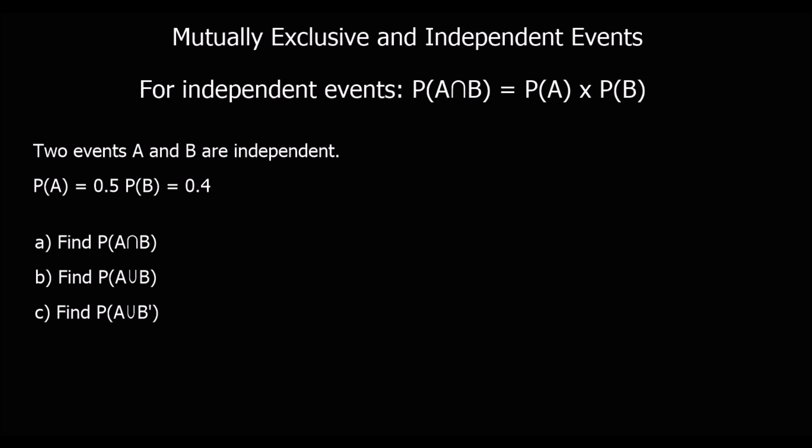In this video we're going to look at mutually exclusive and independent events. We're going to start with independent events. For an independent event, the probability of A and B is equal to the probability of A multiplied by the probability of B. So if A happening doesn't affect the probability of B happening, then the probability of both of them happening together is simply the probability of A multiplied by the probability of B.